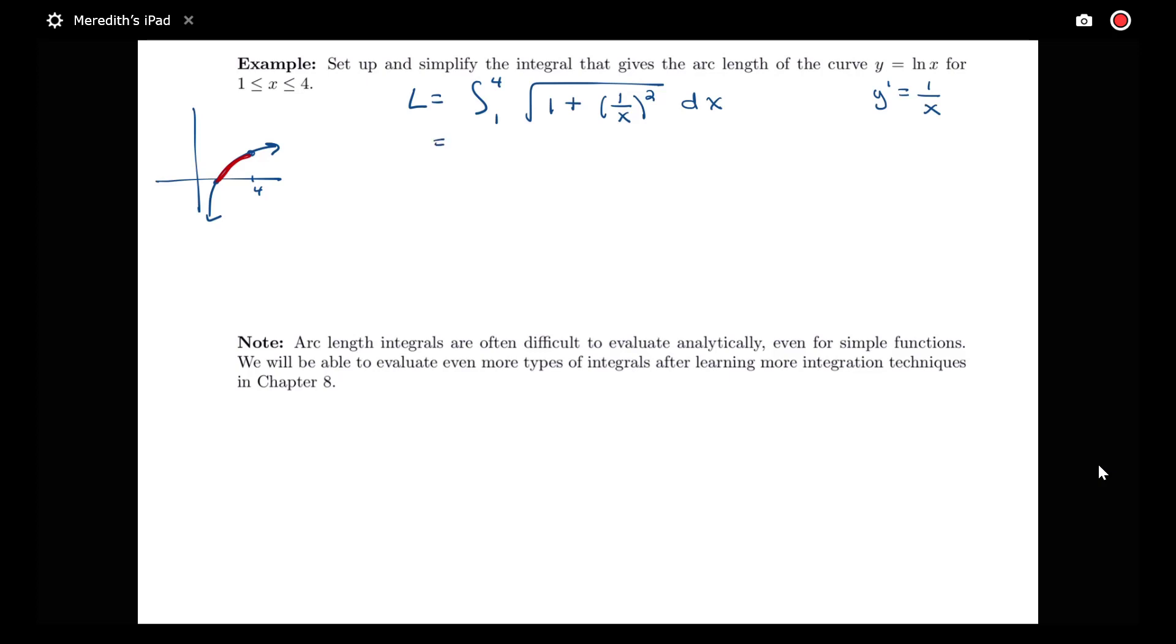Let's just try to simplify this a little bit, but we're not going to totally evaluate this, and we'll see why in a minute. I have the integral from 1 to 4. This is 1 plus 1 over x squared.